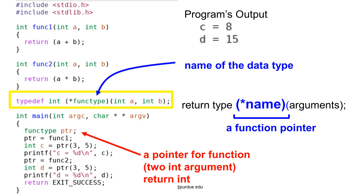After creating this function pointer, we can assign a function to it. The program first assigns func1 to ptr. The next line calls the function using ptr with 3 and 5 as the arguments. The function's return value is written to variable c. The program will print c equals 8 because this function adds the two arguments. It appears that ptr is just a function, even though it is actually a pointer to a function.